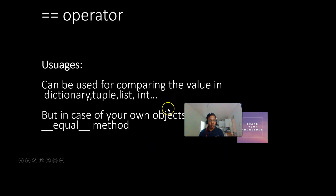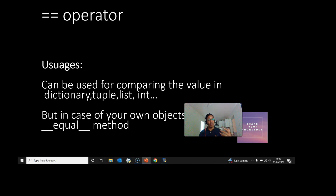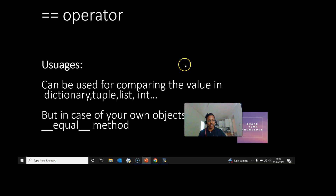I hope you now understand what the `is` and `==` operators are in Python, and when and where to use them. Thank you, guys — have a nice day!